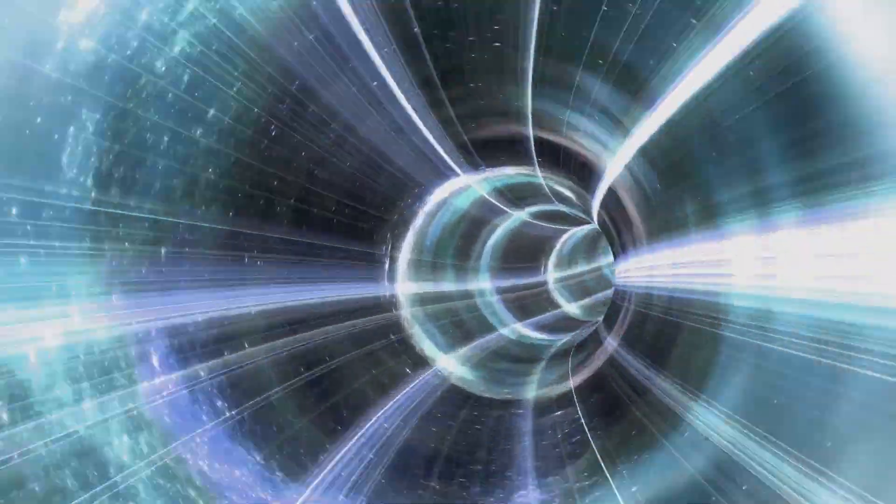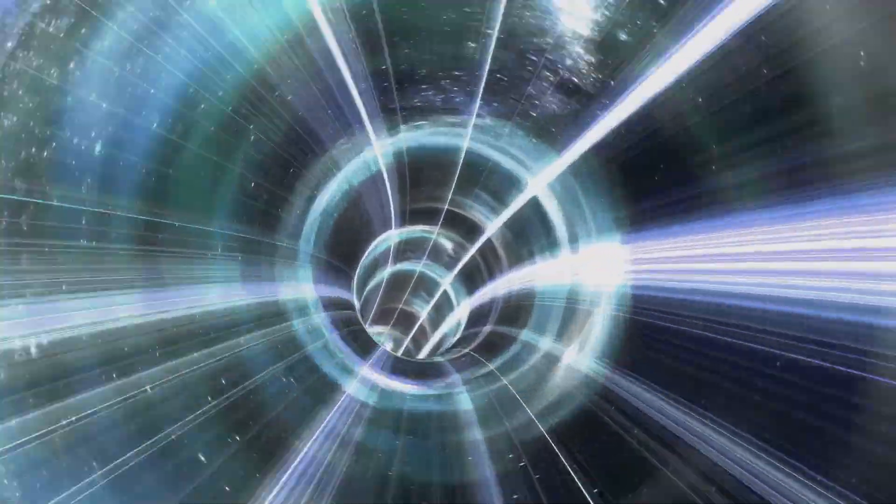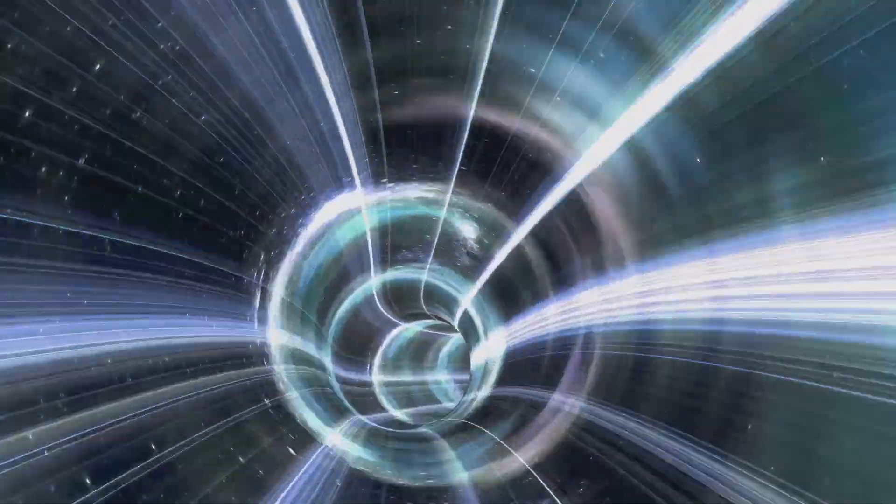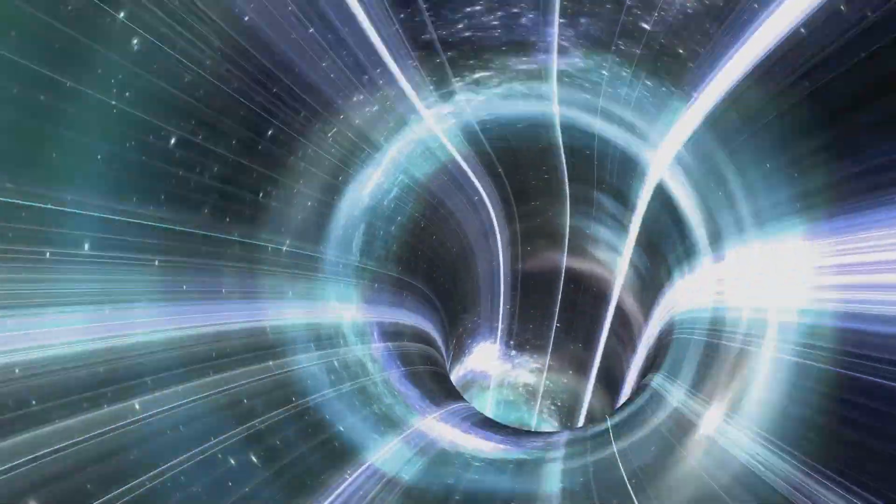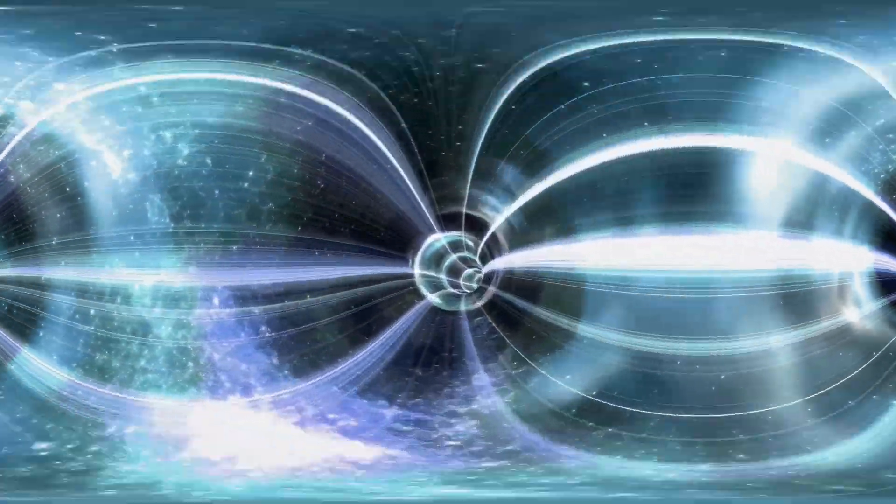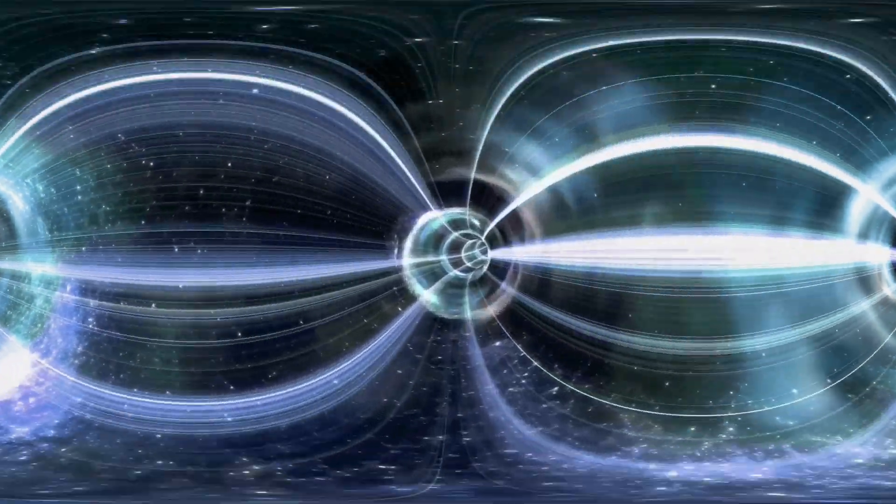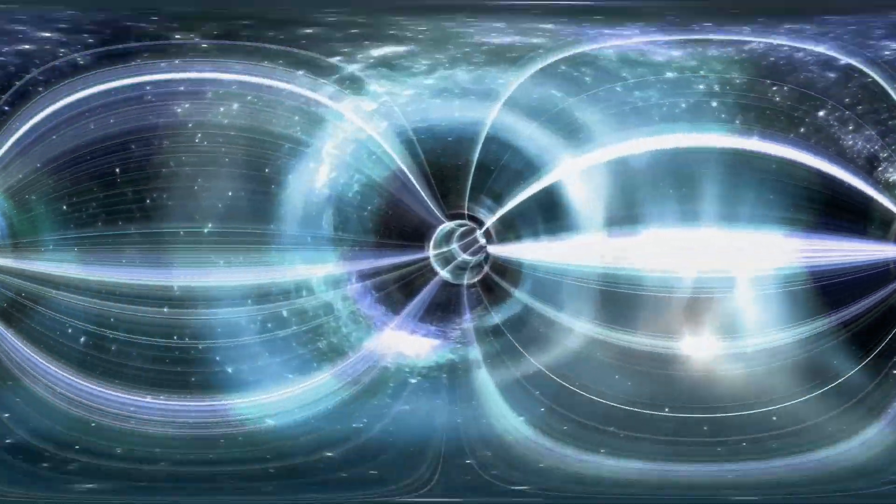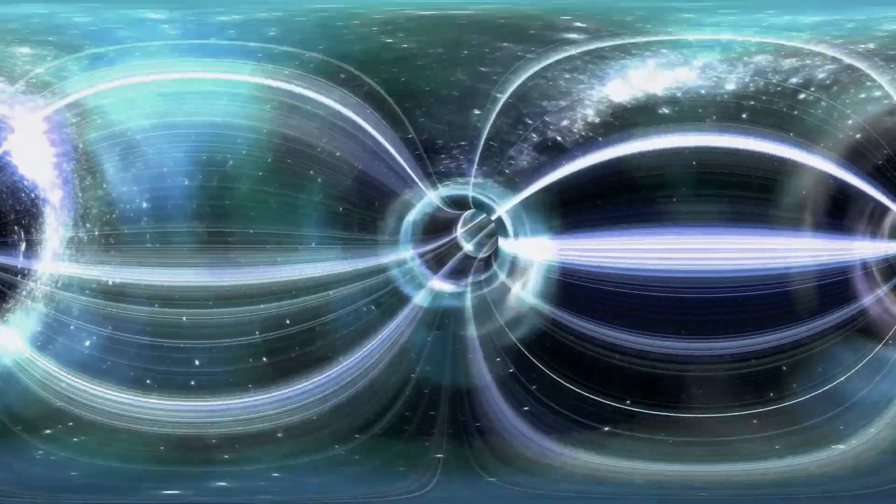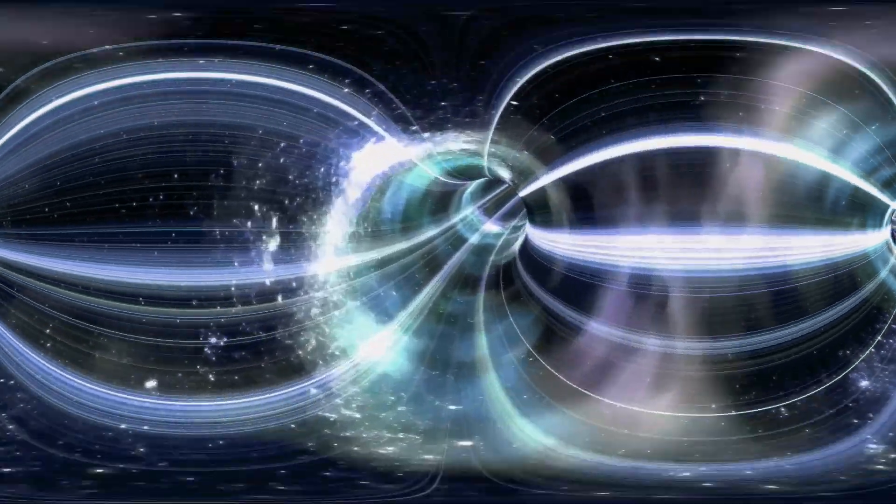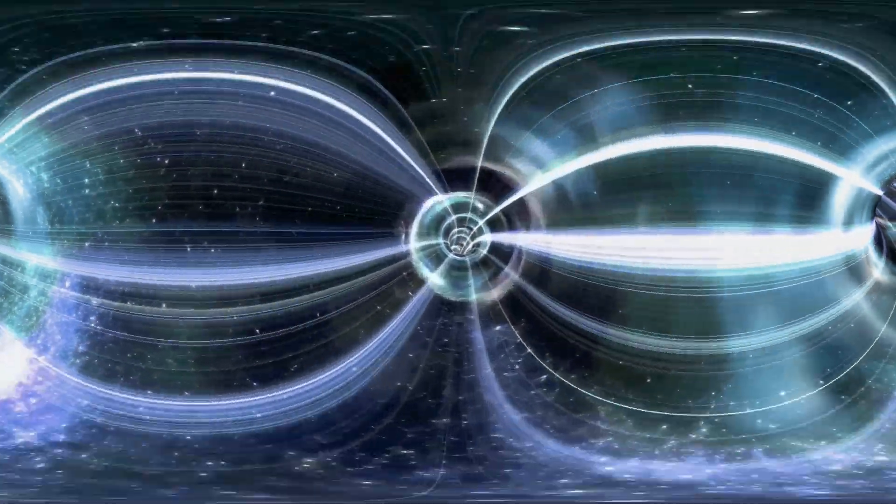Imagine a cylinder, not just any cylinder, but one of infinite length and unimaginable density, spinning at near the speed of light. This, my friends, is a Tipler cylinder, a hypothetical object theorized to warp space-time so drastically that it would create a closed, time-like curve, a path that loops back on itself, allowing for journeys through time.